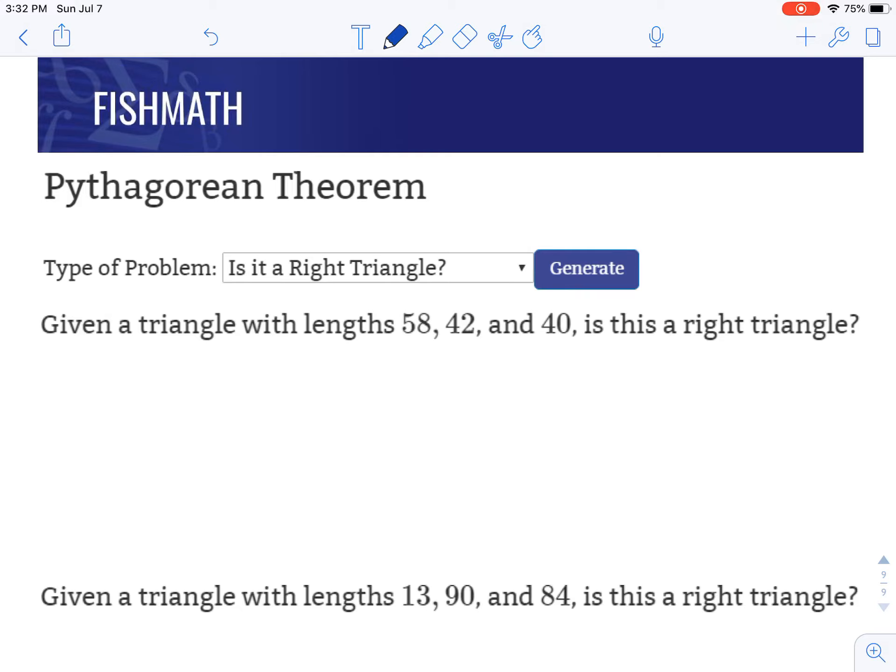So this is called the converse of the Pythagorean theorem. The Pythagorean theorem says if it is a right triangle, if we're told it's a right triangle, then a squared plus b squared has to equal c squared. That's what the original Pythagorean theorem says.